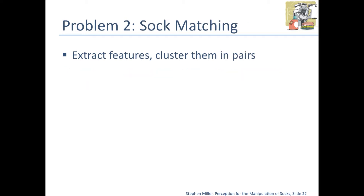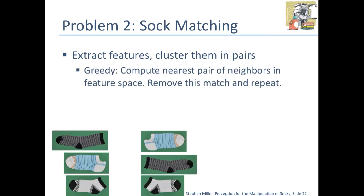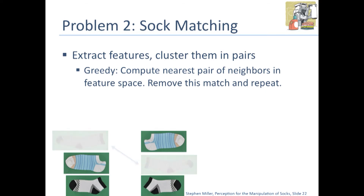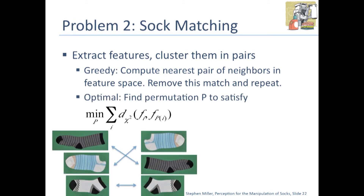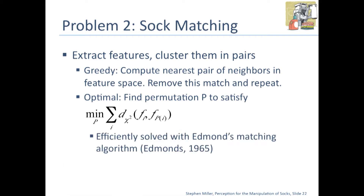To solve the sock matching problem, we extract features and cluster them into pairs. There are two approaches: one is greedy, where we compute the nearest neighbors, remove them, and repeat until all socks are accounted for. Or we have a more optimal strategy where we try to find the permutation that minimizes the sum of distances between matched socks. This is efficiently solved with Edmonds' matching algorithm.